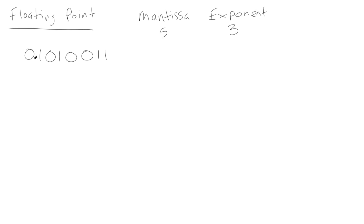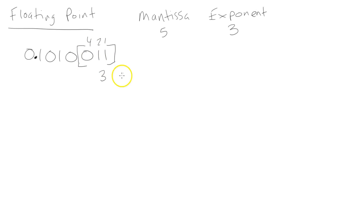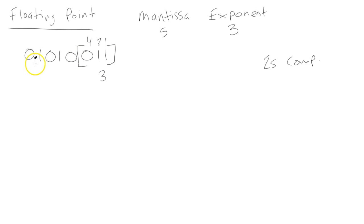So what does that actually mean? Well, we say these are the three bits that represent the exponent. In this case, this number adds up to three — two and one equals three. Because this is normalized and because we are using two's complement, we know that this three is a positive number. So it's saying: move the decimal place three places to the right, because it's positive. So the decimal place is here — we're going to go one, two, three.